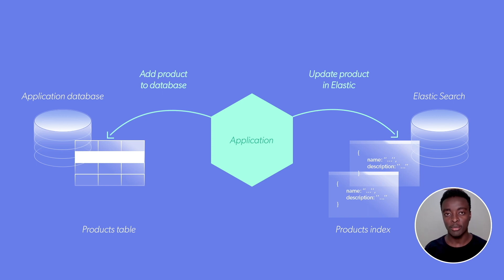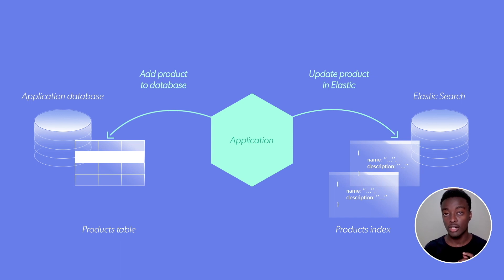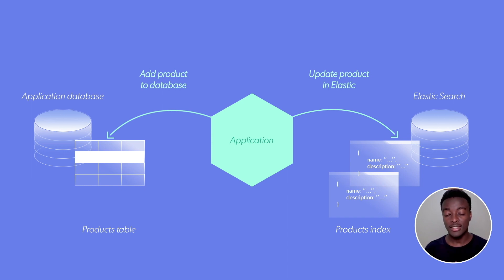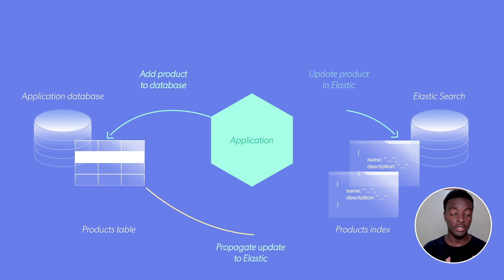As soon as we start making updates to more than one database, we run into the dual-write problem. We all know that a network request or an application can fail, and it's important to make sure that when this happens, we don't leave an inconsistent state behind. When working with databases, we can normally depend on transactions to take care of this. But transactions only work in the scope of a single database. So in this scenario, what could happen is that a new product is added to the application database, but before it's added to Elasticsearch, the application fails. This means that the new product isn't searchable, although it's available. The solution to this problem is to write to the primary database and have the data propagated to the search database in a consistent manner.